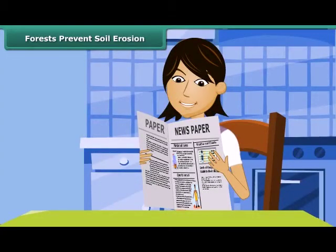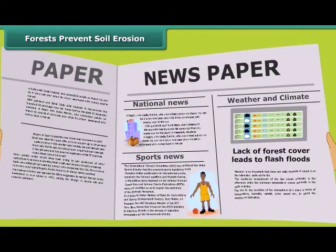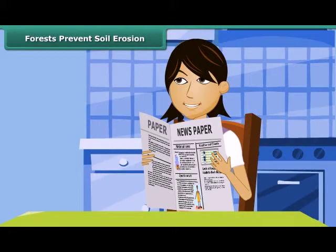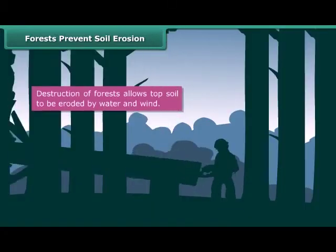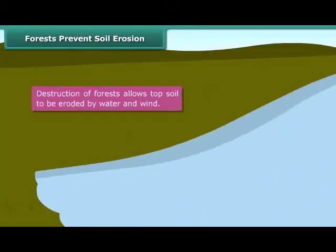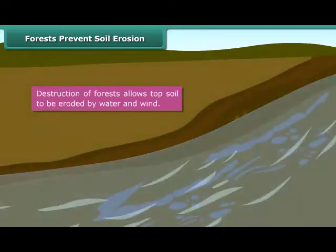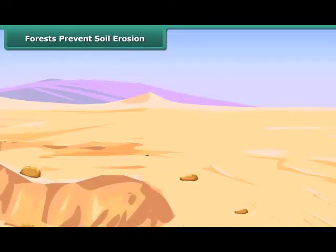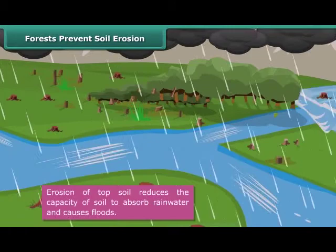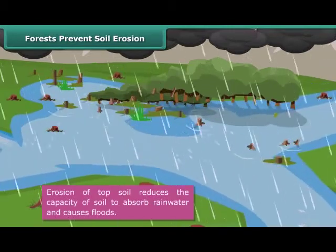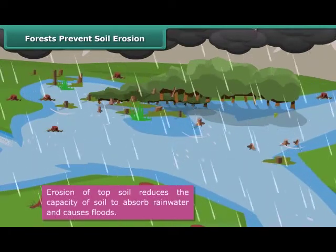Lina comes across a headline in the newspaper: 'Lack of forest cover leads to flash floods.' She is eager to know the connection between forests and floods. Roots of plants not only fix them to the soil but also bind the soil together. When forests are destroyed, the topsoil becomes loose and is eroded by water and wind. This causes an increase in desert land and reduces the fertility of the soil. Erosion of topsoil also reduces the capacity of soil to absorb rainwater, and as a result, there are floods.